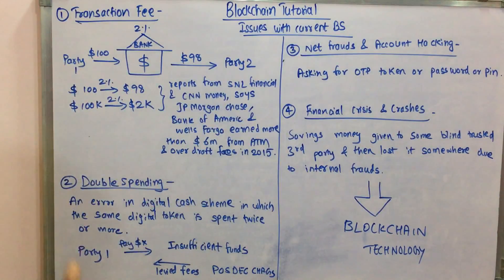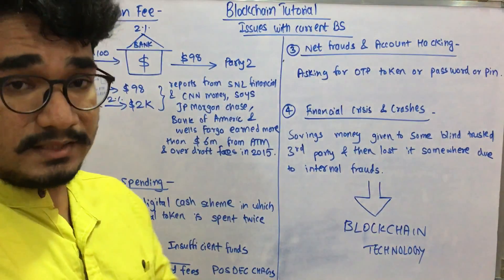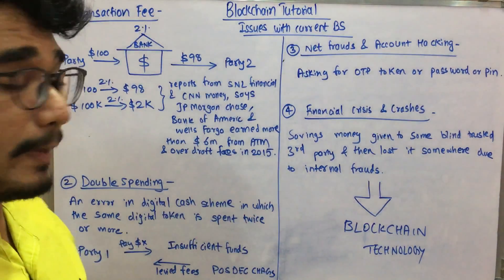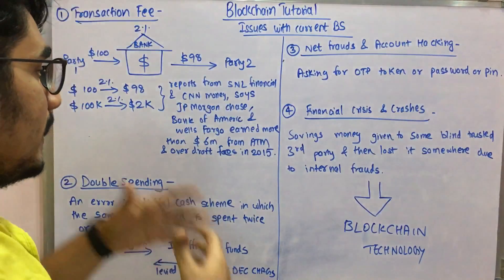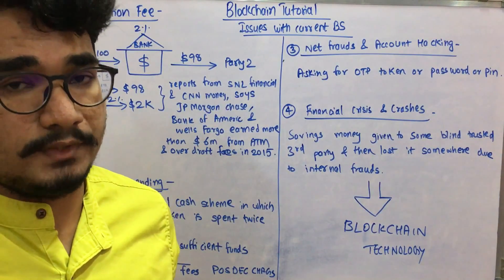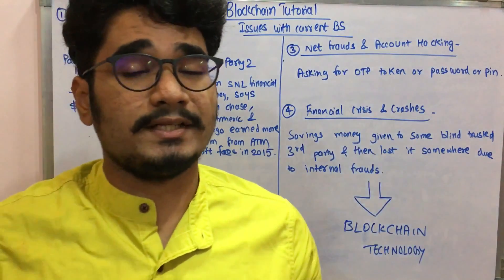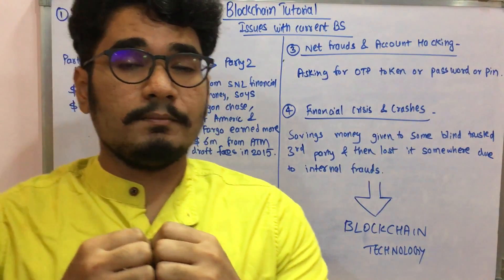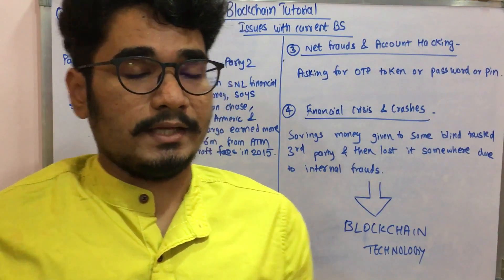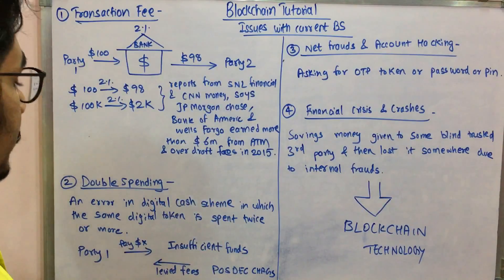That accounts to a very large and huge amount when compared to just $98. These reports are from SNL Financial and CNN Money, which say that JP Morgan Chase, Bank of America, and Wells Fargo earned more than $6 billion from ATM and overdraft fees in 2015. So whether it's net banking or any debit or credit card service, you may be charged a lump sum amount in fees — that's where the transaction fees issue comes in the current banking system.